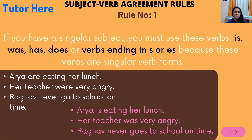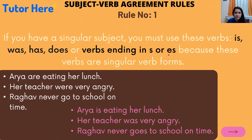Rule number one: in a sentence, when you use a singular subject, the verbs you must use are 'is,' 'was,' 'has,' 'does,' or verbs ending in 's' or 'es,' because these verbs are in singular form. So if you have a singular subject, the verb you use is also singular.